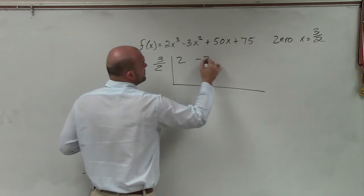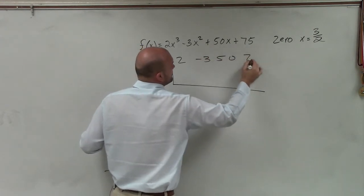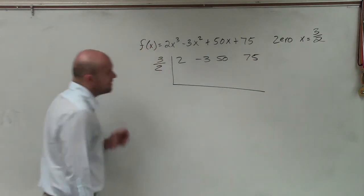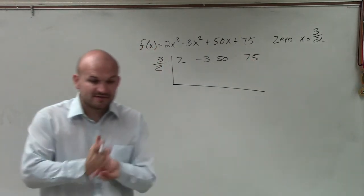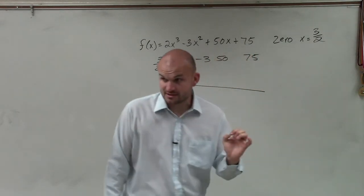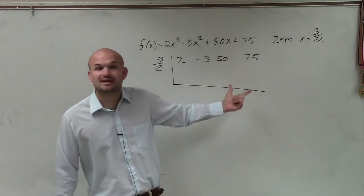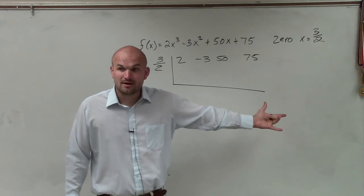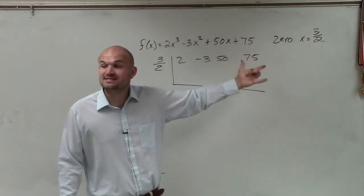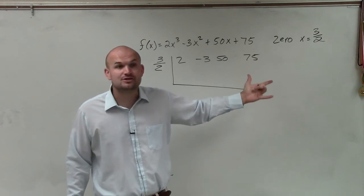So I have 2, negative 3, 50, and then 75. And remember, guys, what we talked about. If it's a zero and we apply synthetic division, then the remainder is going to be zero. So if I do synthetic division and I get a remainder that's not zero, I either put up the wrong zero, wrote down something, or I did something else wrong. So I have to make sure I can verify it.